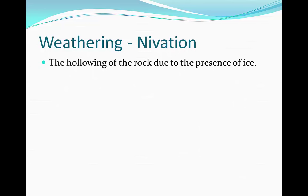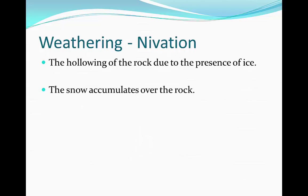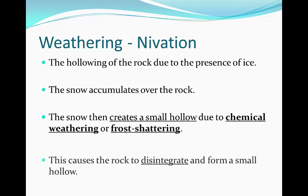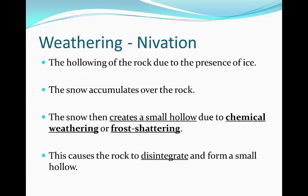Nivation is the hollowing of rock due to the presence of ice. How it happens is that snow accumulates over the rock. The snow then creates a small hollow due to chemical weathering and frost shattering. Chemical weathering is basically corrosion — some of the snow may be slightly acidic and that dissolves parts of the rock. This causes the rock to disintegrate and form a small hollow called a nivation hollow.